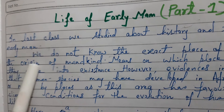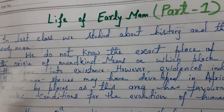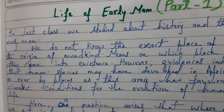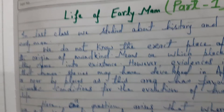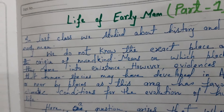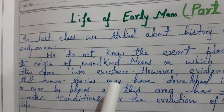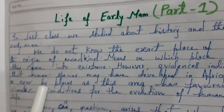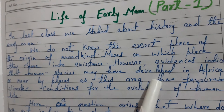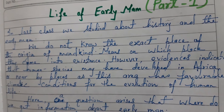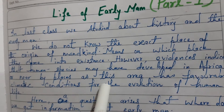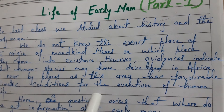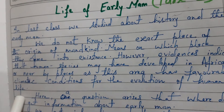We do not know the exact place of the origin of mankind — we do not know on which place they first came into existence. However, evidences indicate that human species may have developed in Africa or nearby places, as this area has favorable climate conditions for the evolution of human life.